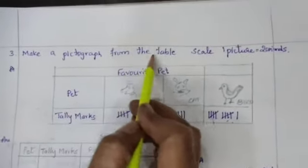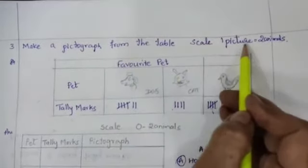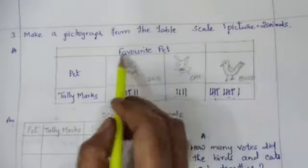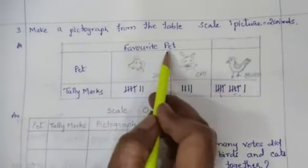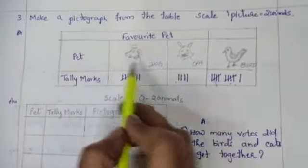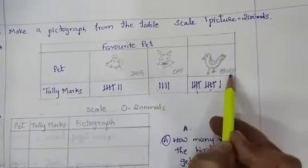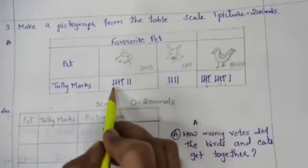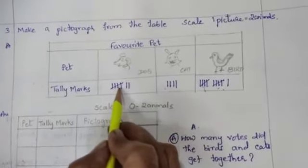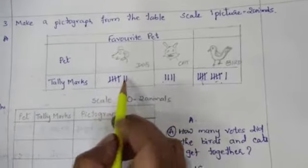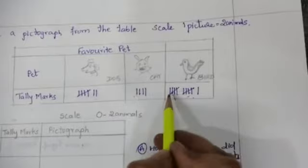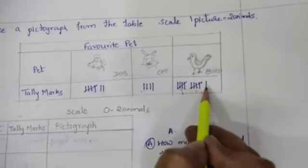Now third question: make a pictograph from the table, scale 1 picture is equal to 2 animals. Here is the given table. Favorite pets are: first pet dog, cat, bird. So tally marks, they got here how many favorite pets for dog: 1, 2, 3, 4, 5, 6, 7. And for cat: 1, 2, 3, 4. And for bird: 5, 10, 11.